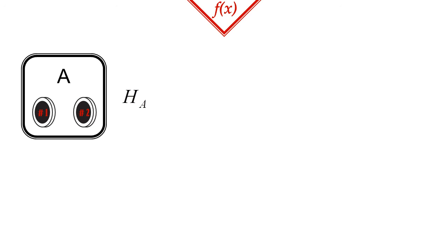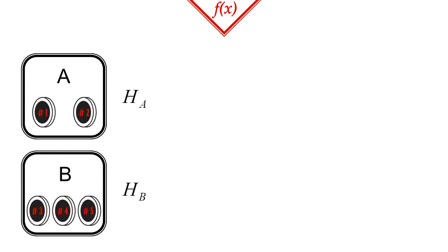Let's see a second one, in which we generalize this for more than two qubits. Let's take system A, for example a two-qubit system, whose state is described as a vector in an H_A Hilbert space, and a second system B, like a three-qubit system, associated with H_B.